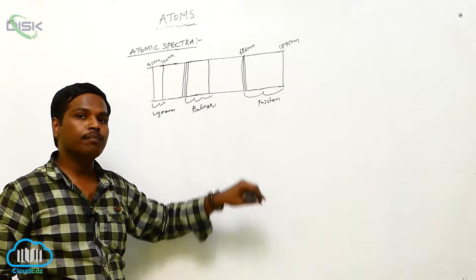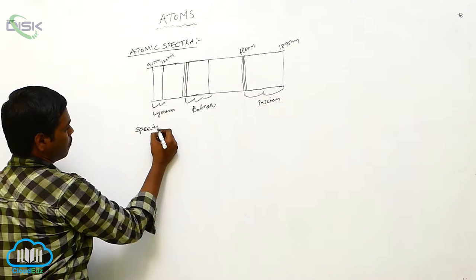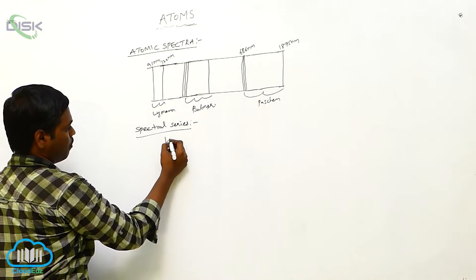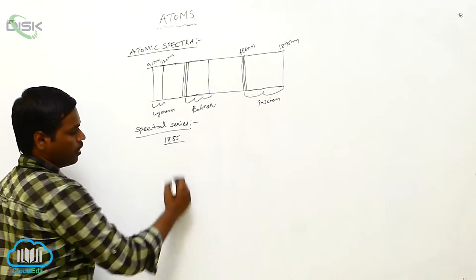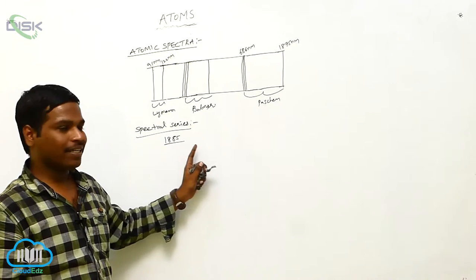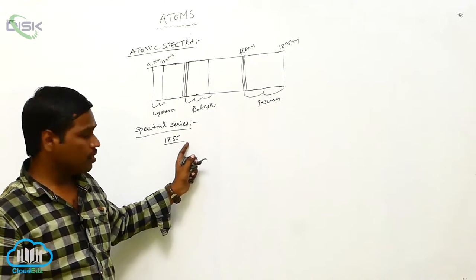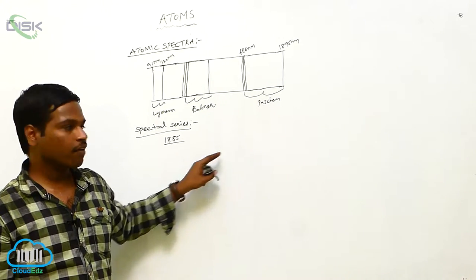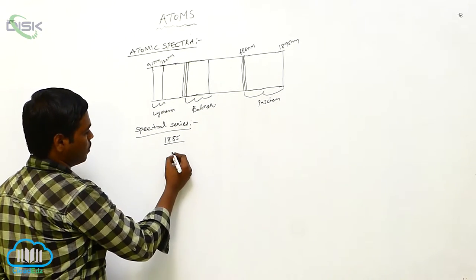As the wavelength increases, we get the Balmer series. These are the different spectral series. The spectral series of the hydrogen atom was studied in the year 1885 by Johann Jakob Balmer.